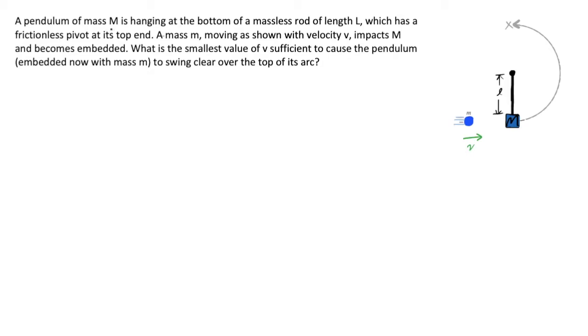A pendulum of mass uppercase M is hanging at the bottom of a massless rod of length L, which has a frictionless pivot at its top end. A mass lowercase m, moving as shown with velocity v, impacts M and becomes embedded. What is the smallest value of v sufficient to cause the pendulum, embedded now with mass m, to swing clear over the top of its arc?